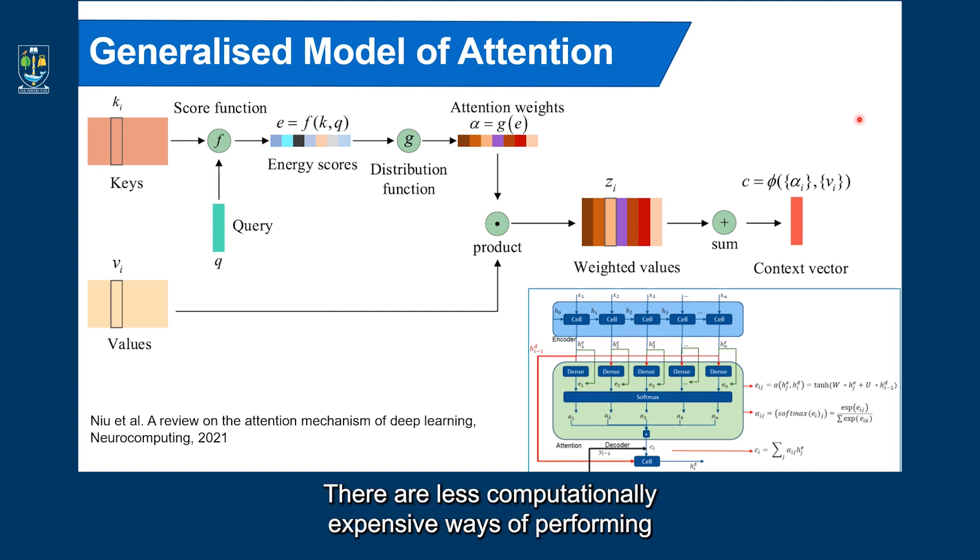There are less computationally expensive ways of performing this attention mechanism through, for example, a dot product. The distribution function G corresponds to the softmax layer that we've seen earlier in our recurrent neural network, and it is used to normalize all the energy scores to a probability distribution. There are several G functions explored by researchers because attention distribution function has a great influence on the computational complexity of the whole attention model.